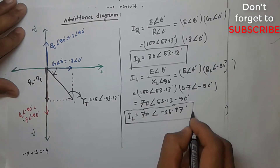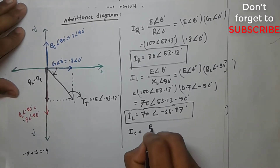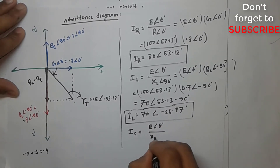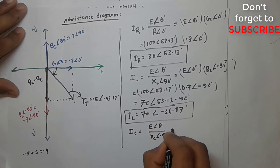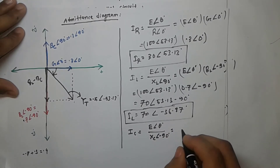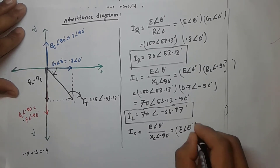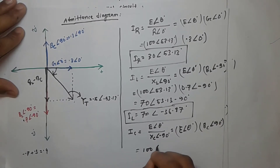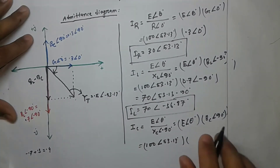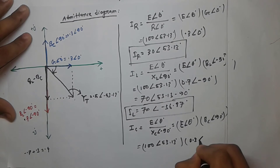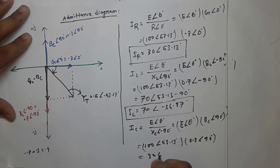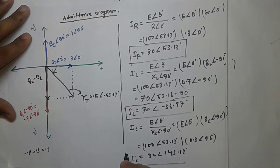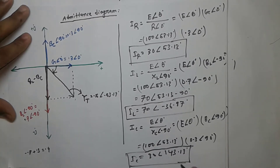IL result is short tor angle minus 36.87 degrees. Last one is IC: IC = E angle theta divided by XC angle minus 90 degrees, so 1 by XC gives capacitive susceptance BC. Therefore IC = E angle theta times BC angle 90 degrees. The numerical result gives angle 53.13 degrees.